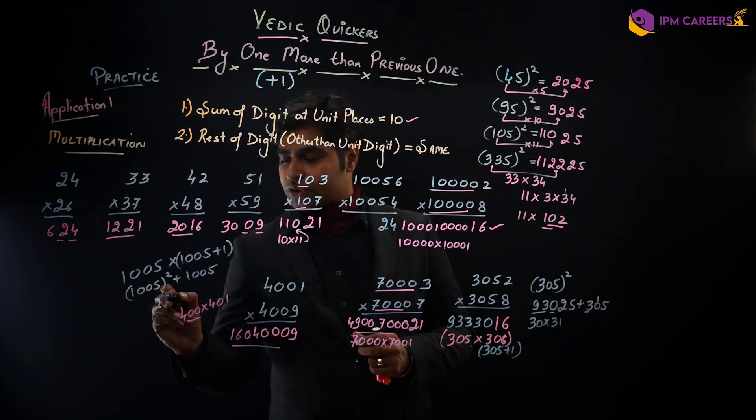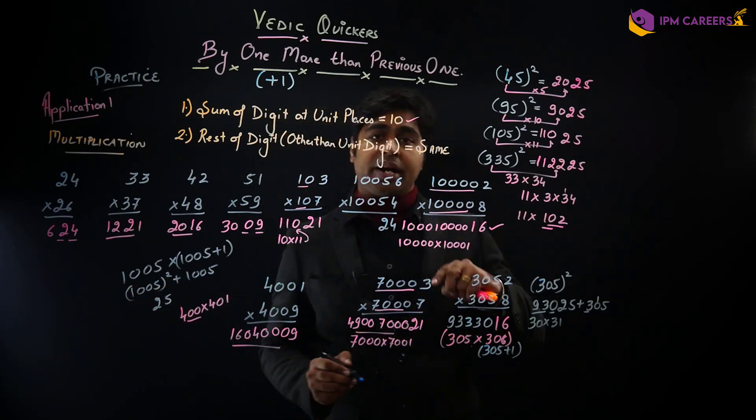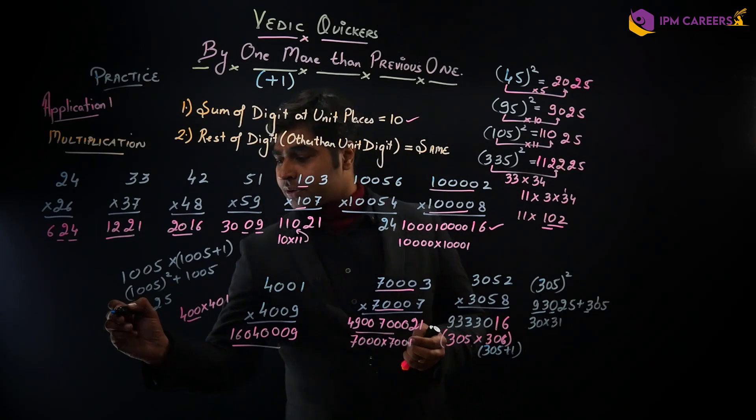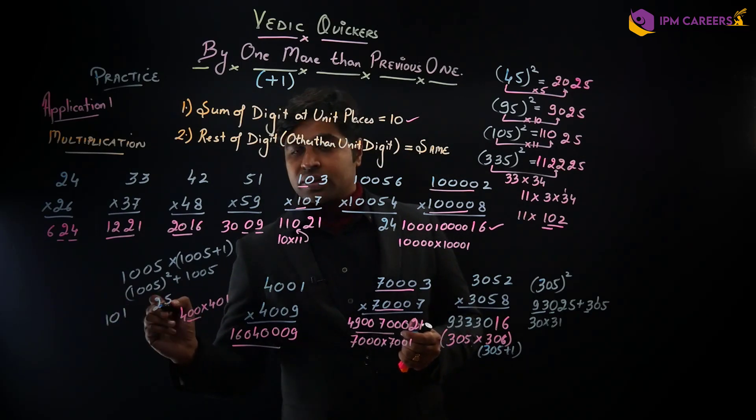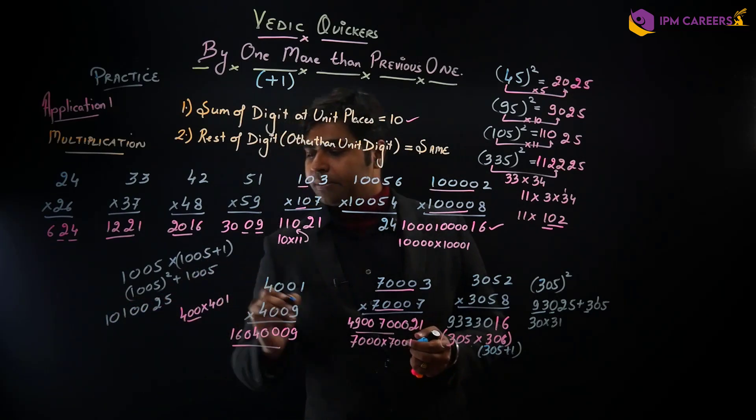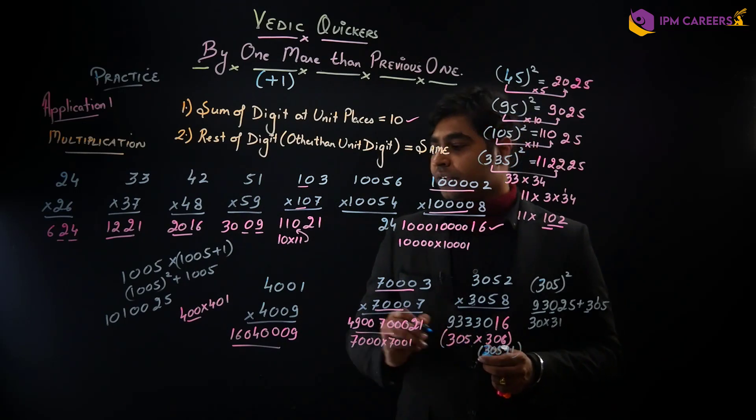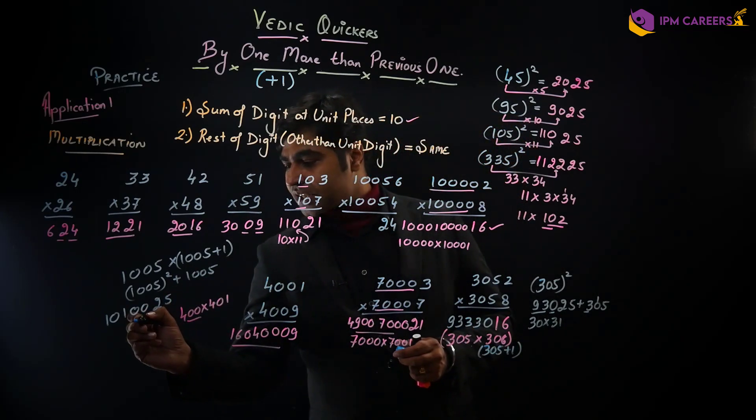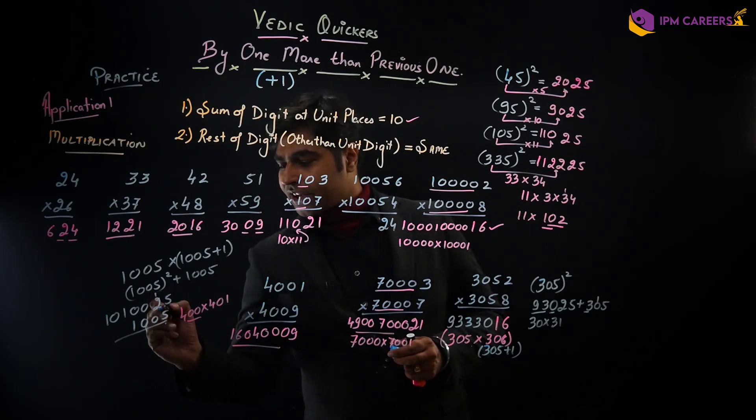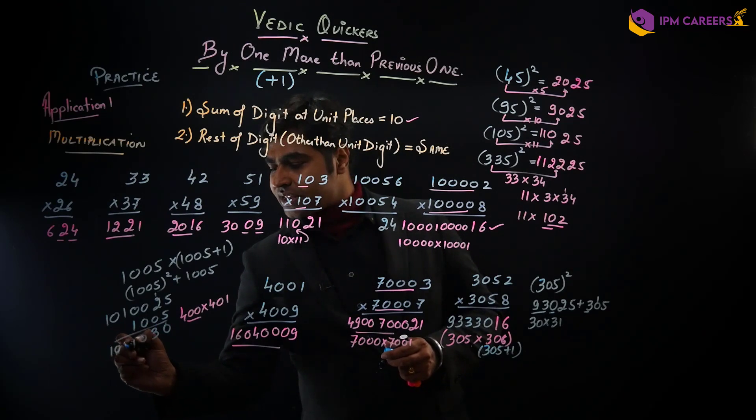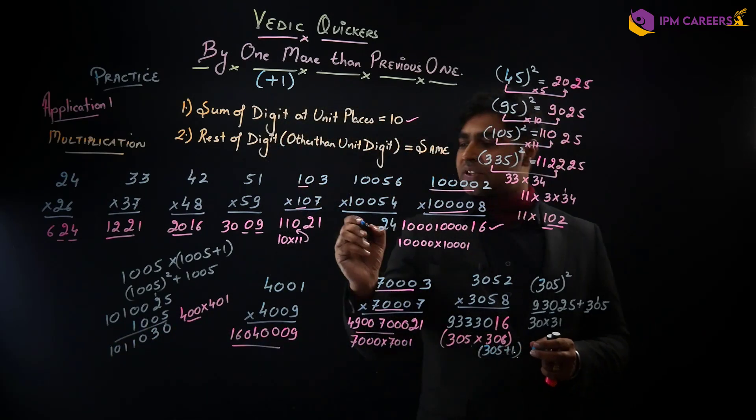Ye kya ho jayega, 5 ka square 25, aur 100 multiplied by the next number 101. 101 toh jayega 101 into 100, matlab 101, 0, 0, 2, 5. Ismei jem mujhe add karna hoga 1005. Toh jayega 5 plus 5, 10, 2 plus 1, 3, 0, 1 and 101, 1. So the overall answer would be 1, 0, 1, 1, 0, 3, 0, 2, 4.